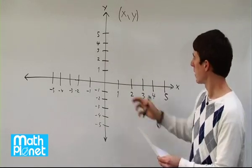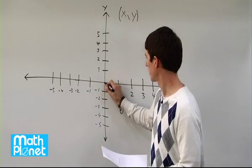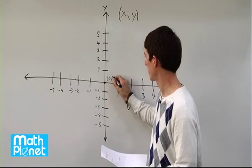So the first one, 0, 0, doesn't really matter what order it's in because they're the same. 0, 0, the origin, so that's the point 0, 0.